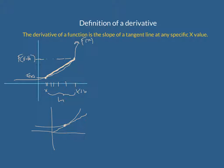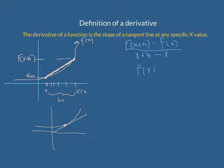The slope of the secant line would be y2 minus y1 over x2 minus x1. So that would be f of x plus h minus f of x, over x plus h minus x. That simplifies to f of x plus h minus f of x divided by h. In order to get the derivative, we want our h to approach zero, so we're going to take the limit of this function as h approaches zero.